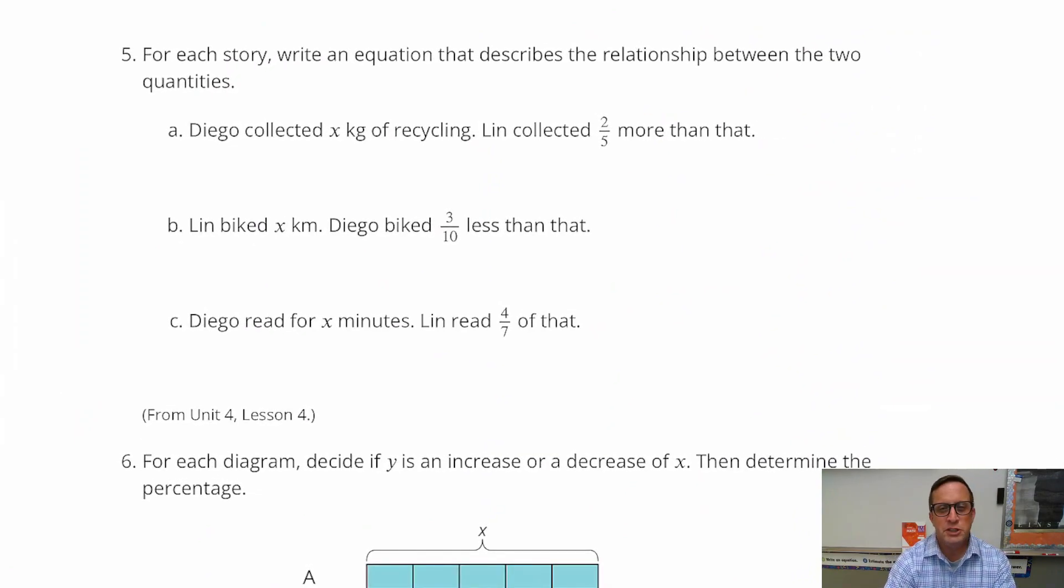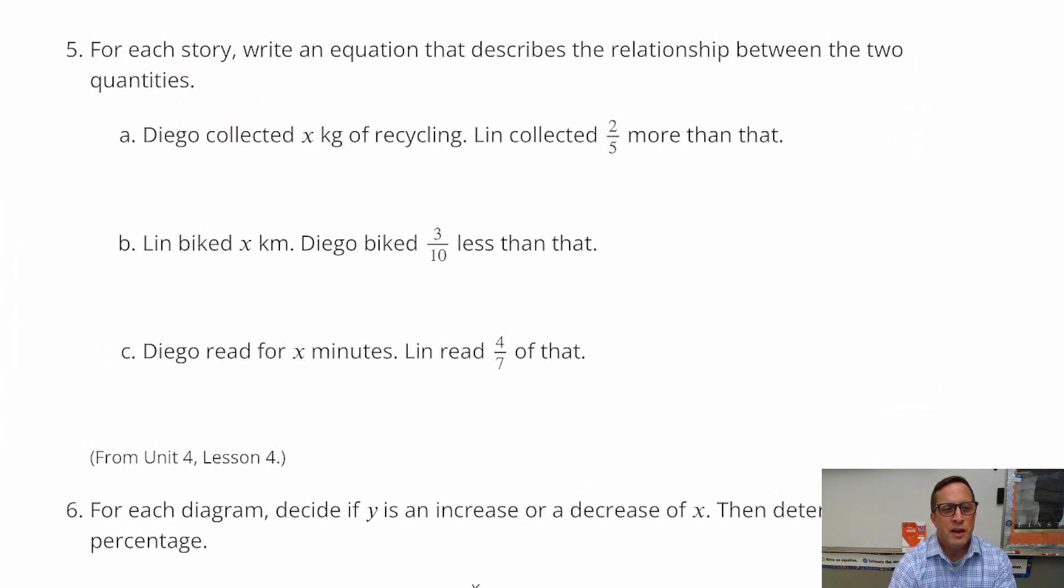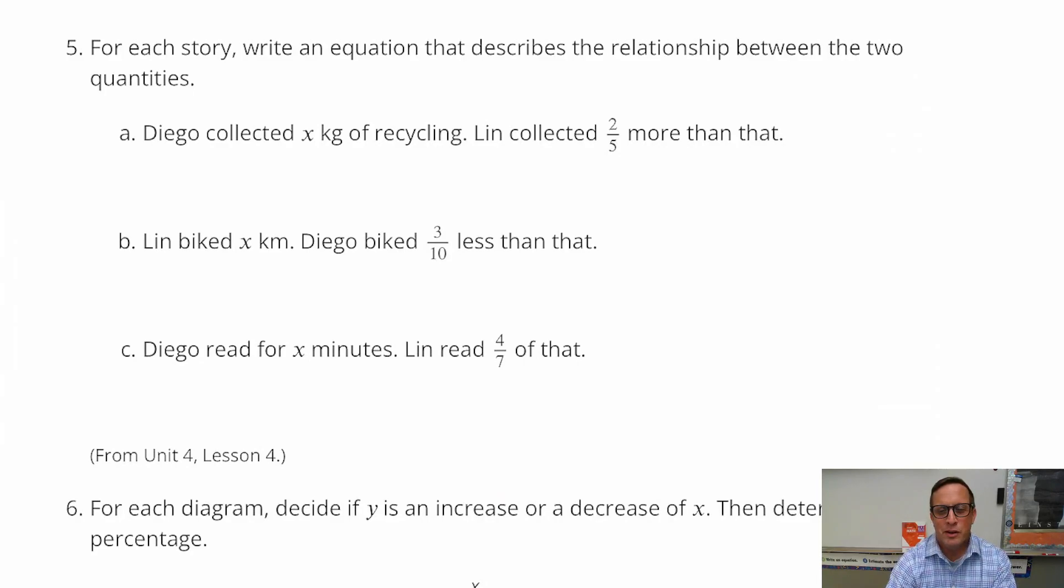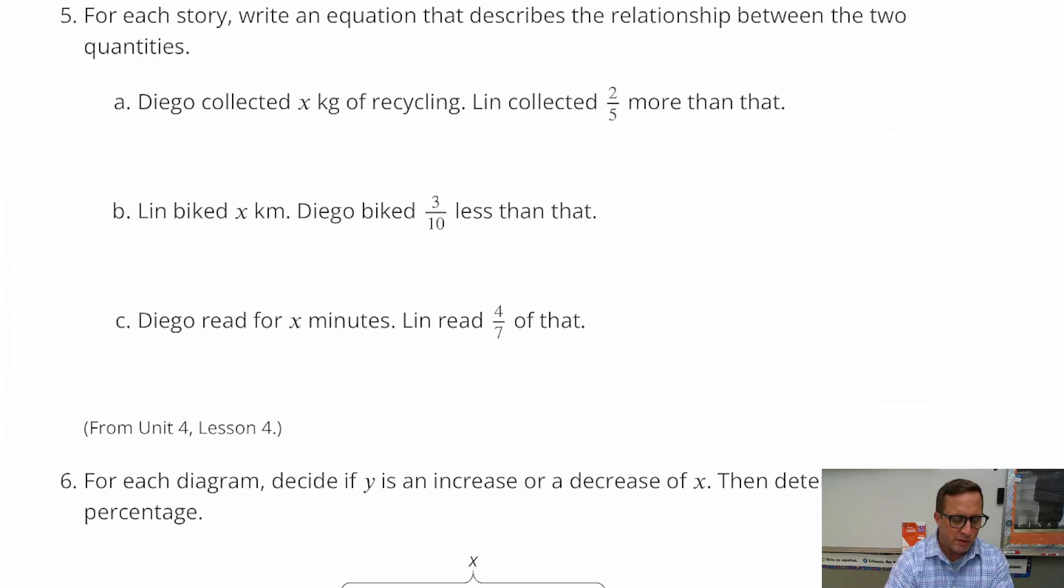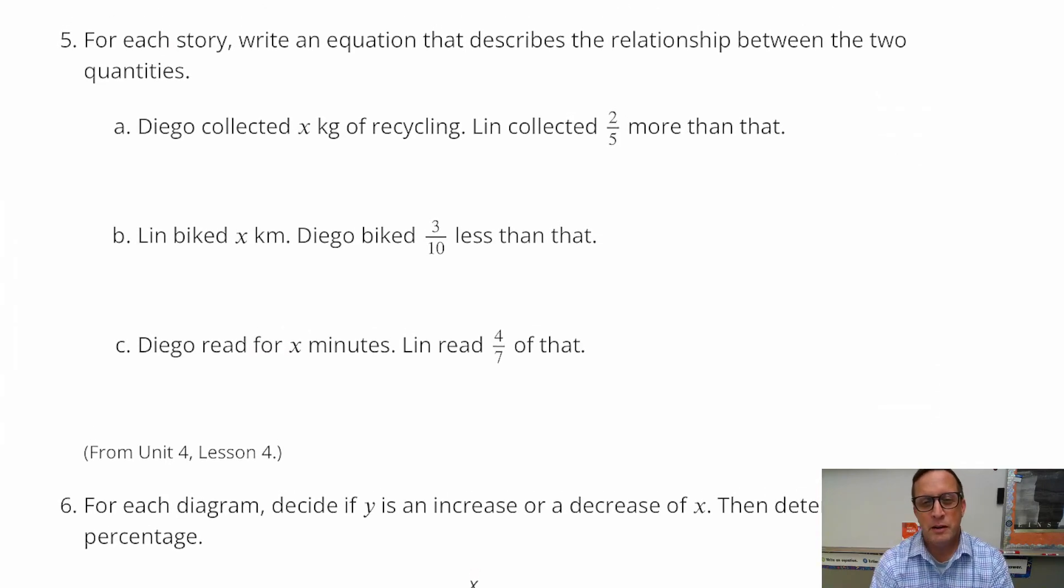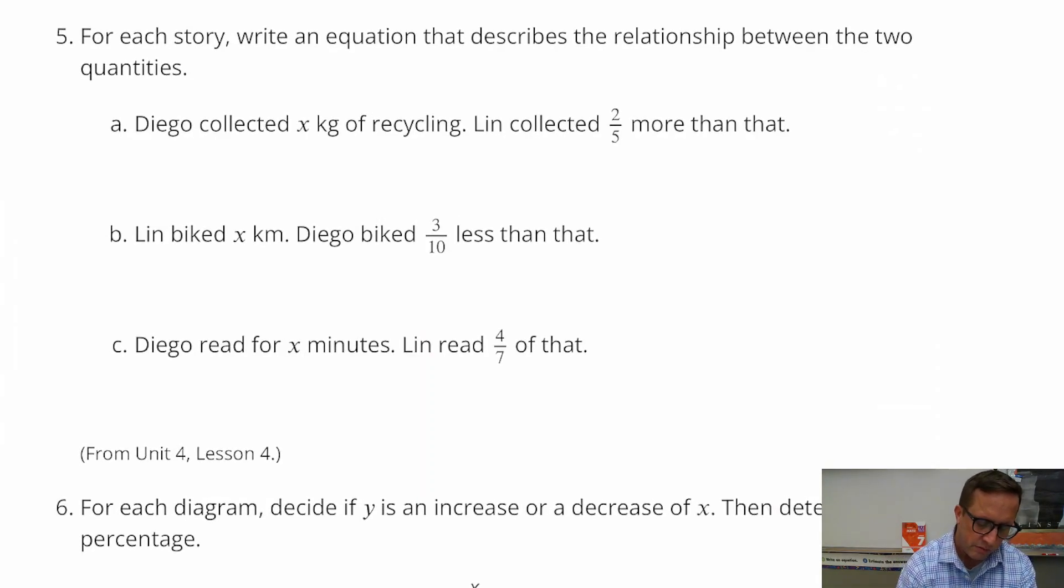Number five. For each story, write an equation that describes a relationship between the two. Diego collected x kilograms of recycling. Lynn collected two-fifths more than that. I'm trying to think whether to draw a picture for this, if that would help you or not. I'm going to break this up into fifths. So those are fifths. And Lynn collected two more fifths, right? Right there. So that's plus two more fifths.